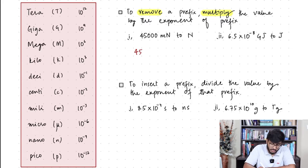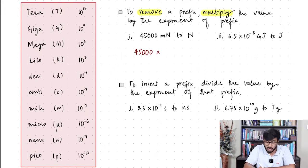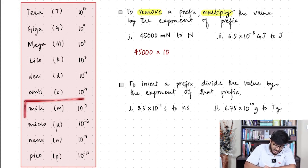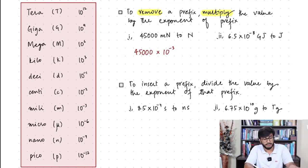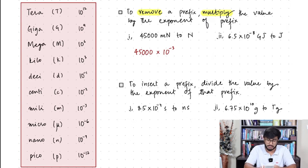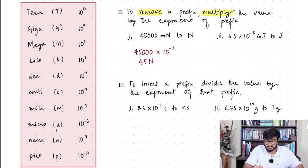We have 45,000 millinewtons and we want to convert it into newtons — removing milli. To remove, you multiply by the exponent of milli, which is 10⁻³. You can multiply 45,000 by 10⁻³ on your calculator — calculators are allowed in all physics papers. The answer is 45 newtons.